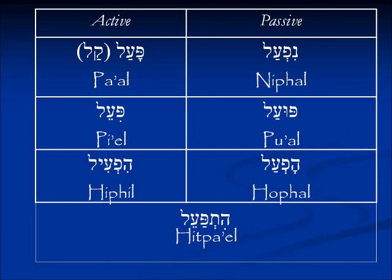Looking at Hebrew examples: Psalm 15:2 — 'holech tamim,' he who is walking in a blameless way, 'who does tzedek,' who does what is righteous, 'dover emet belibavo,' speaks truth in his heart. Psalm 11:3 — 'the righteous man, what paal, what can he do?' Now looking at the binyan chart again: the simplest active form is the paal, also called kal. Its corresponding passive is the nifal. A little more intensive is the piel; its corresponding passive is the pual. The hifil is a causative form, the hofal is its corresponding passive, and the hitpael is a reflexive form.